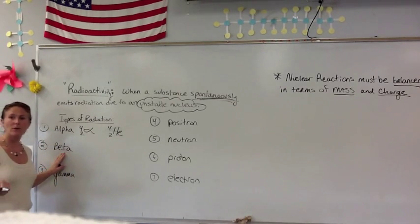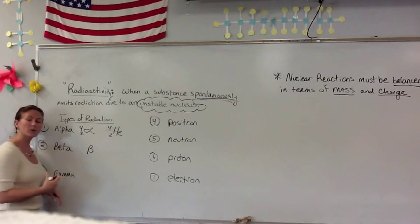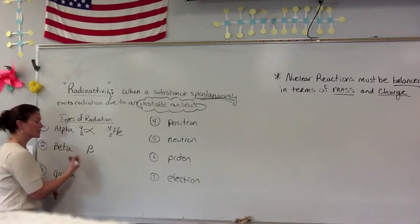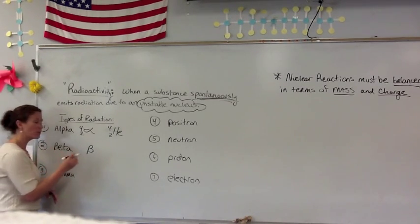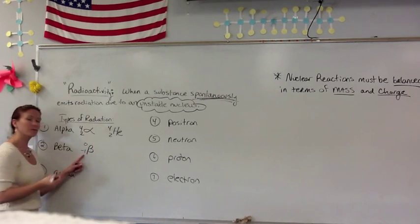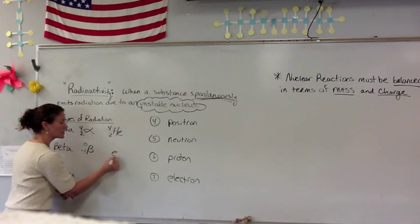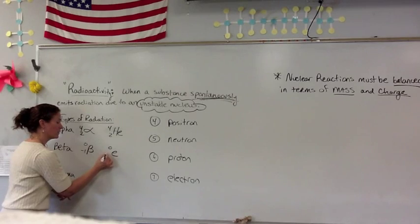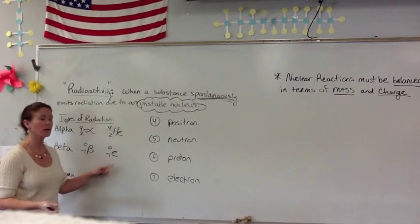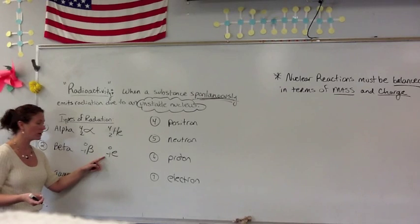The next type of radiation is a beta particle. Those are basically high-speed electrons. Since it's an electron, it has a zero for mass and a charge of negative one. Many times beta particles are also symbolized with an E because it is a high-speed electron — mass of zero and a charge of negative one.